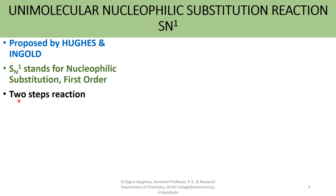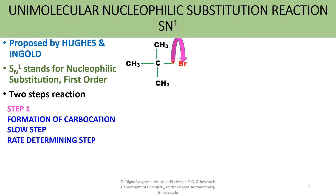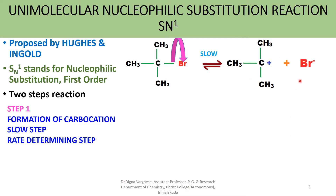It is a two-step reaction. The first step involves formation of carbocation and it is a slow step reaction, so it acts as the rate determining step. In step 1, the substrate, i.e. alkyl halide, undergoes electron shift to the bromide ion. It is a slow step reaction and forms a carbocation and bromide ion. So in step 1, formation of carbocation is the rate determining step.